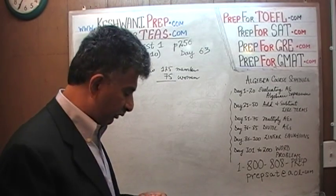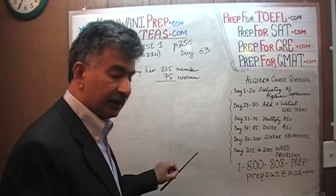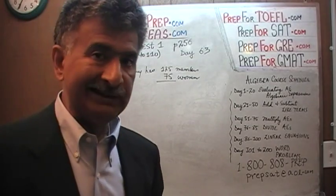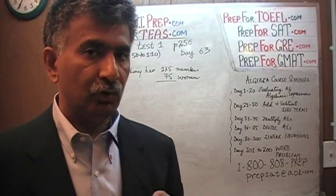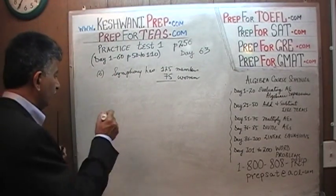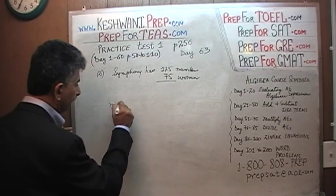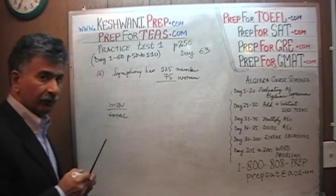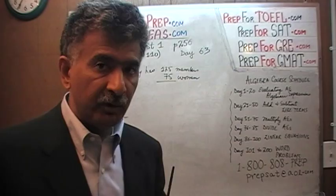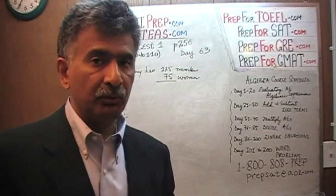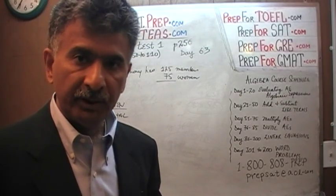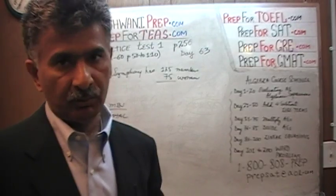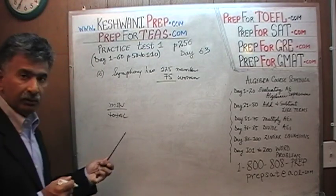This is a simple ratio question. Listen very carefully. The only reason why people get these kinds of questions wrong is lack of attention — lack of concentration. Make sure you pay attention to what is being asked. Here they are looking for the ratio of men to total. They are not looking for the ratio of men to women, women to men, or women to total. There are four different ways they could have asked the question: men to women, women to men, men to total, or women to total. Here they are looking for ratio of men to total.